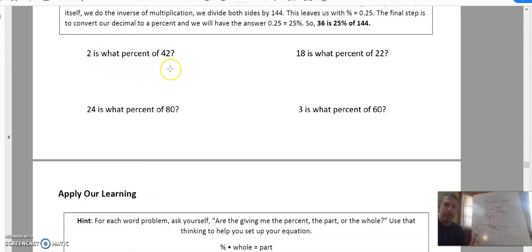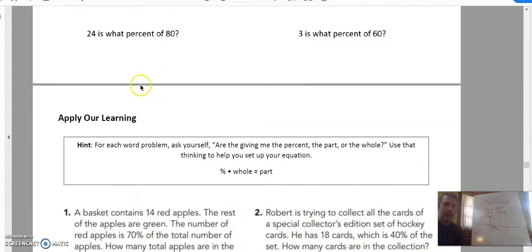Now, how do I know which one is the whole and which one is the part? Look for the phrase percent of. The number that comes right after percent of is our whole. That means this is our part. Because you can't always assume the bigger number is the whole. That's not always the case. It's the word or the number that comes after the phrase percent of. That's your whole. The other number, that's your part.